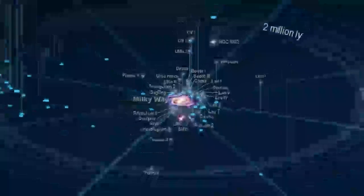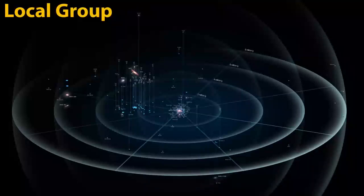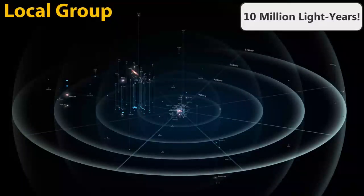Zooming out even further and we arrive at the local group of galaxies, a collection of 54 different galaxies that is about 10 million light years across.